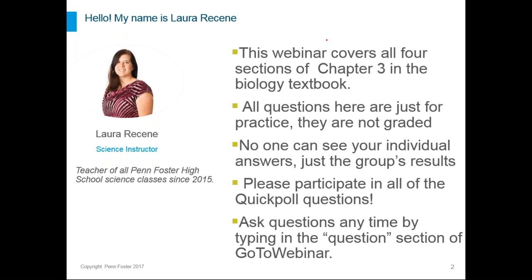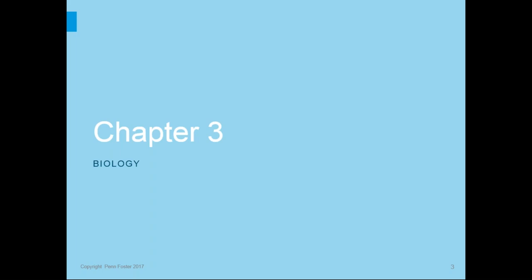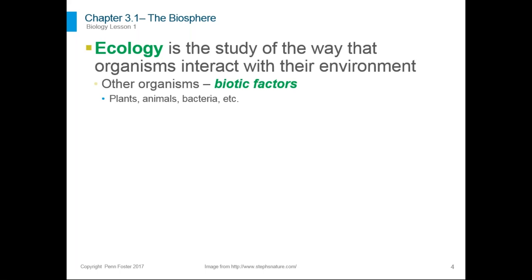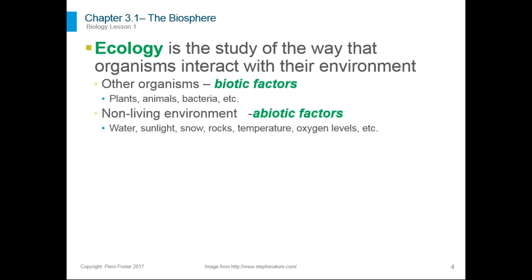Chapter three is about ecology. Ecology is the study of the way that organisms interact with their environment. This includes interacting with other organisms and with the non-living environment — other organisms such as plants, animals, bacteria, etc. These are called biotic factors. Any living things. Any part of the environment that's not alive is an abiotic factor. Examples include water, sunlight, snow, rocks, temperature, humidity, and oxygen levels — all abiotic, part of the environment but not living things.